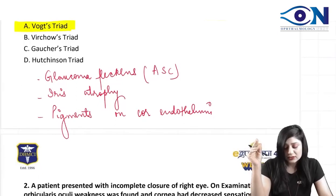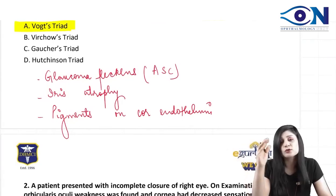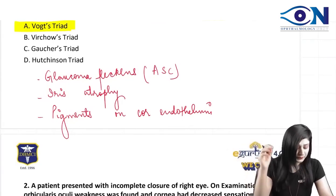It consists of anterior subcapsular cataract, patches of iris atrophy, and also pigments on the corneal endothelium.